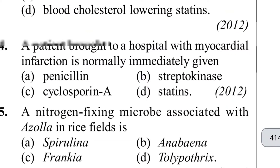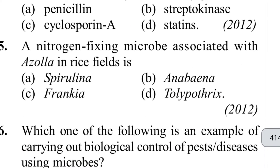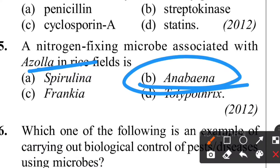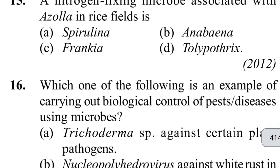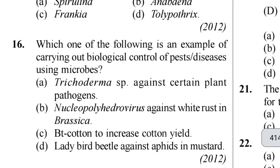Fifteenth question: a nitrogen-fixing microbe associated with Azolla in rice fields. This is a most commonly repeated question - in Azolla rice fields, Anabaena is used. You can remember it as: Azolla - Anabaena. Sixteenth question asks for an example of biological control of pest disease using microbes.